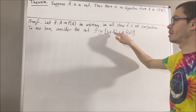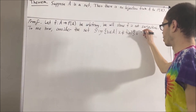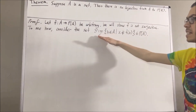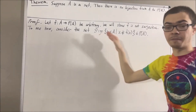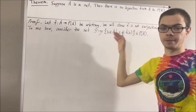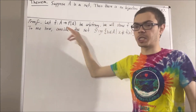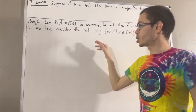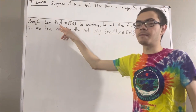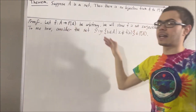Now, S is a subset of A and therefore belongs to the power set of A. The claim is that S does not belong to the range of F. To show that S does not belong to the range of F, we're trying to show that S is not an output value of the function F. So we're going to show that given an arbitrary element in the domain of F, the output value is not S.